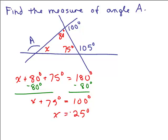Now of course you could have added and got X plus 155 and then subtracted 155 from both sides. You're still going to get X equals 25. So we know this angle here for X is 25 degrees.